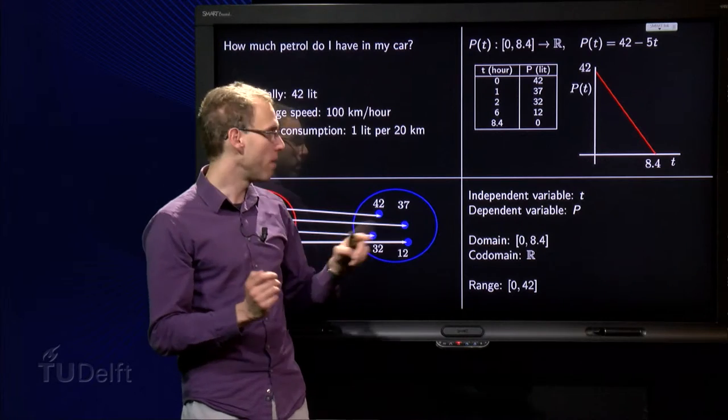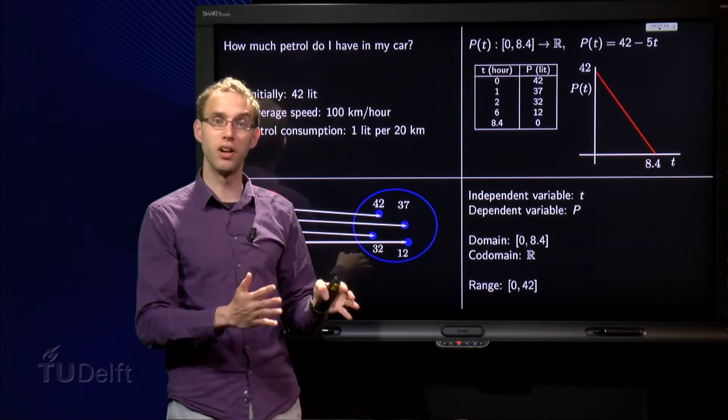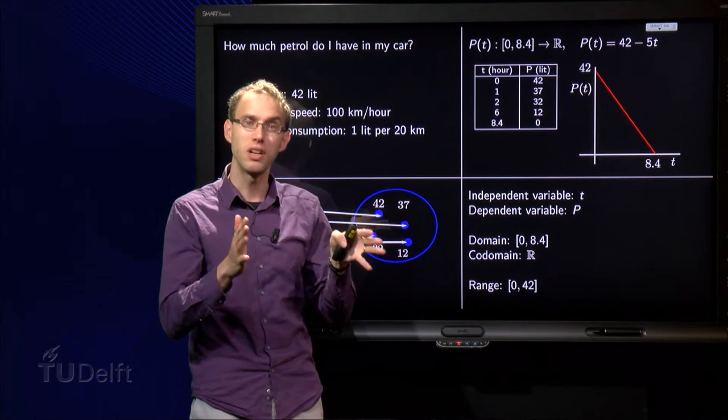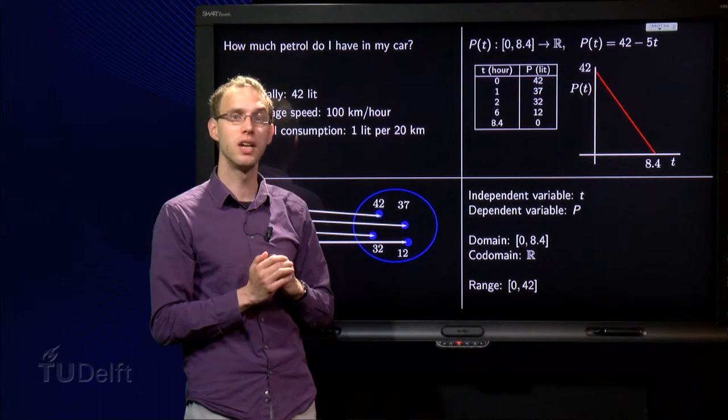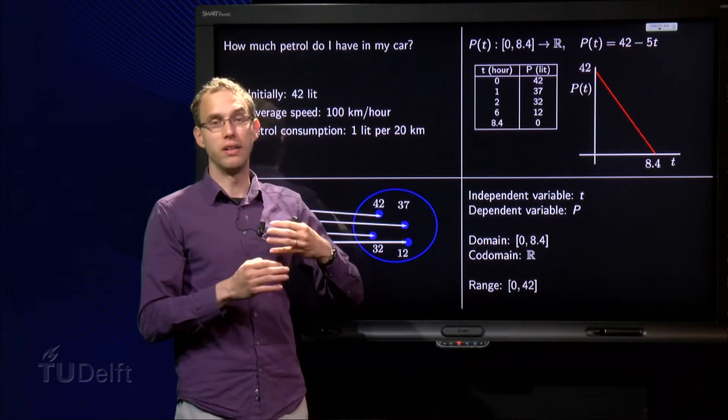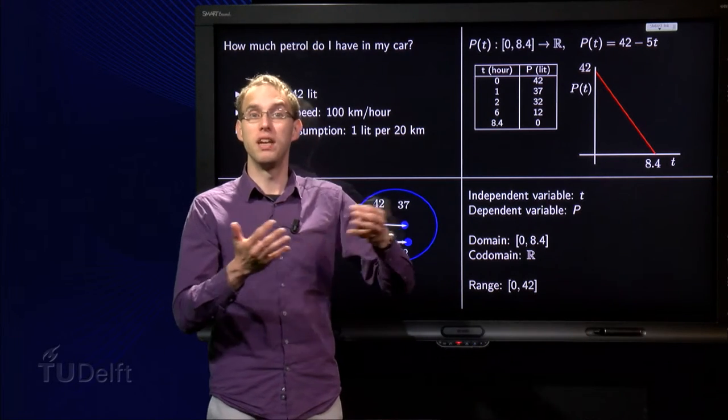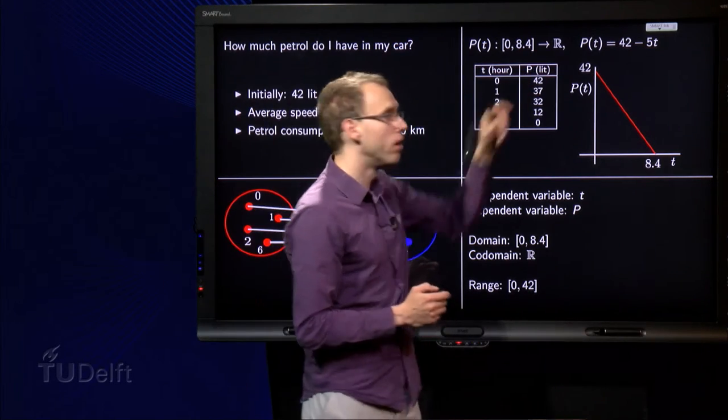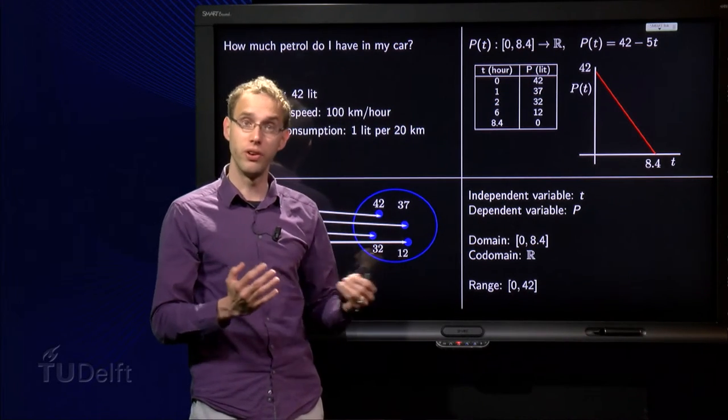The domain of the function is in this case 0 until 8.4. The number, those are the admissible input values. And, well, what comes out, P of T, that will be an amount. So that will be, in particular, a real number. So the codomain is a set of all reals in this case.